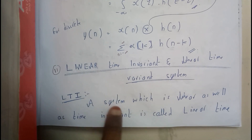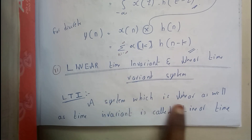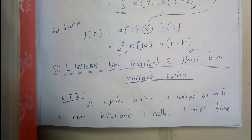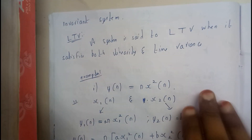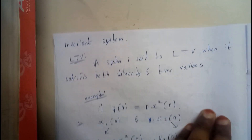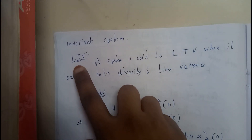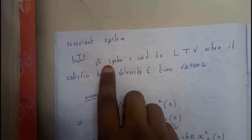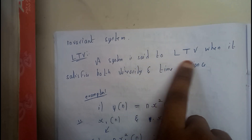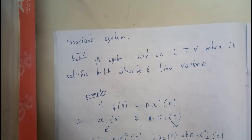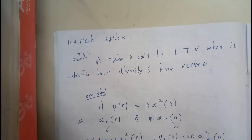So first let us go through LTI. A system which is linear as well as time invariant is called a linear time invariant system — sorry, time invariant system. LTV is nothing but a system that is said to be LTV when it satisfies both linearity and time variant properties.